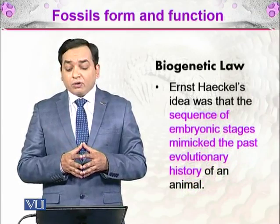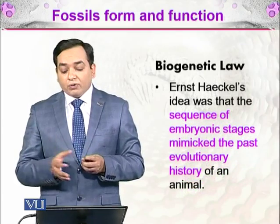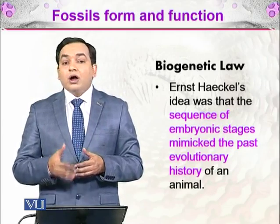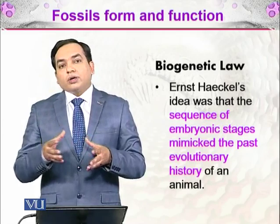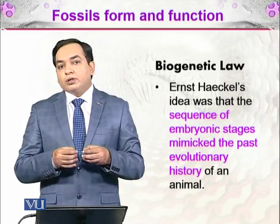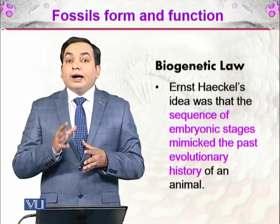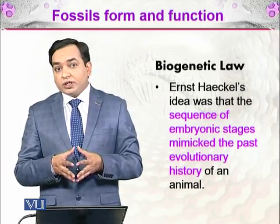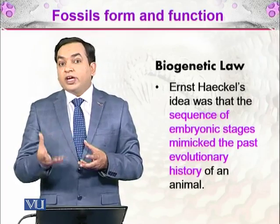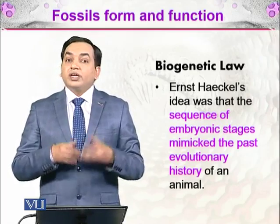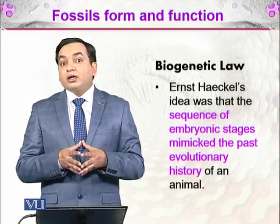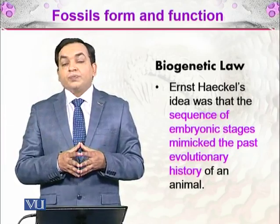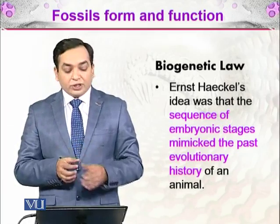In the biogenetic law, Haeckel's idea was that the sequence of embryonic stages mimics the past evolutionary history of an animal. For example, the human unborn baby has a tail, whereas adults and newborns do not. This indicates that the tail was present in our evolutionary history and that some of our ancestors did have a tail.